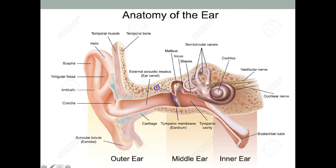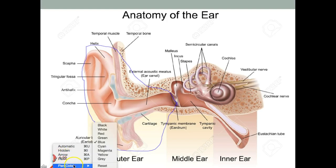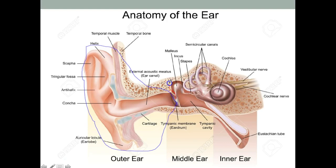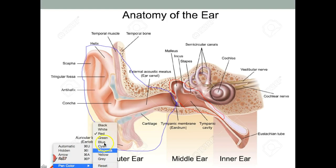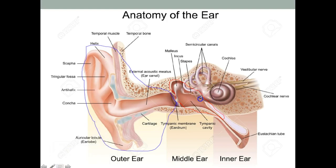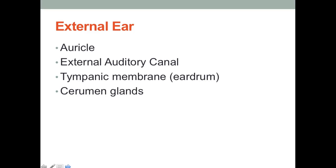Everything out here is considered the outer ear. In this area you have the middle ear, sort of like a cavity, and we also have the inner ear area where you find this organ called the labyrinth. So: outer ear, middle ear, and inner ear.